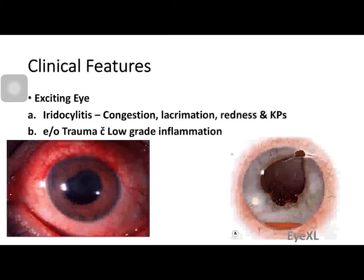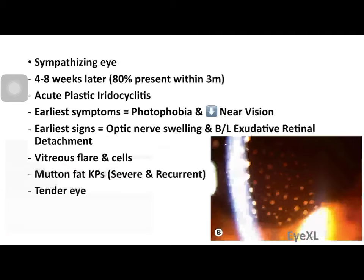Let's divide the clinical features into the exciting eye and the sympathizing eye. The exciting eye shows iridocyclitis — congestion, lacrimation, redness, and granulomatous keratic precipitates with a mutton-fat appearance, just like acute anterior uveitis. There may also be evidence of penetrating trauma with low-grade inflammation, and there may be prolapse of uveal tissue — the bottom right image shows iris tissue protruding through a sclerocorneal wound at the one o'clock position.